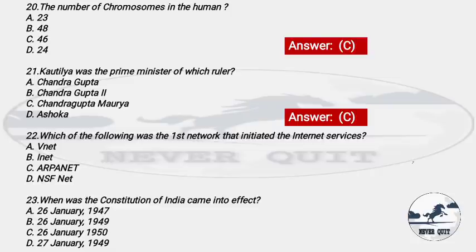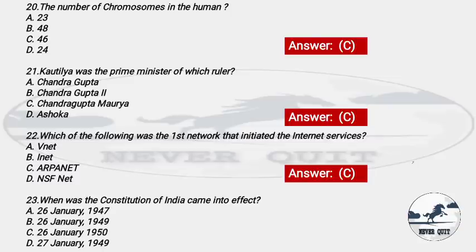Question 22: Which of the following was the first network that initiated internet services? Options: A) BNET, B) INET, C) ARPANET, D) NSFnet. The right answer is option C — ARPANET. This is a very important question.